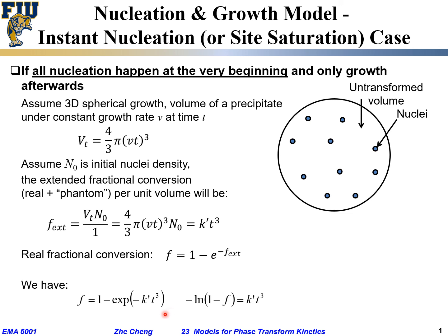We can rearrange this equation: moving terms and taking the natural log gives ln(−ln(1 − f)) = ln(k′) + 3·ln(t). Taking the one-third power of the left side yields the kt form, which is the typical kinetic behavior relating the constant times t to the fraction of conversion — for 3D nucleation-growth with site saturation.